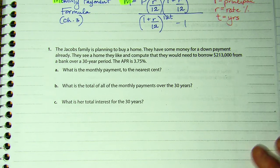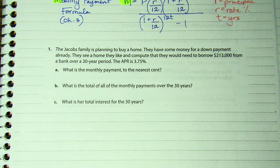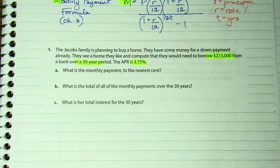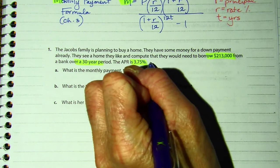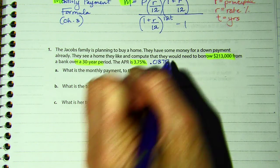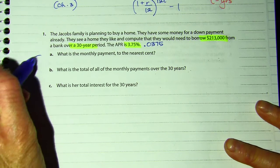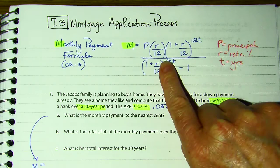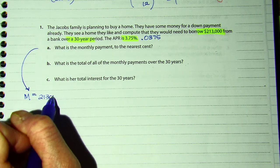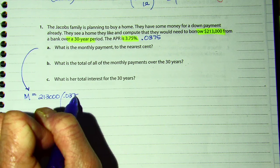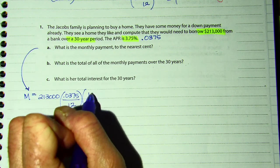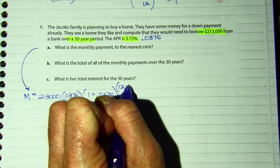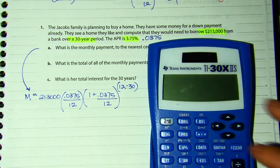So the Jacobs family is planning to buy a home. They have some money for a down payment already. They see a home they like and compute that they would need to borrow $213,000 over 30 years. And the APR, annual percentage rate, is 3.75 — let's go ahead and make that a decimal: .0375. What is the monthly payment to the nearest cent? So I'm going to calculate it right here using a calculator. So M equals P — the amount we're borrowing. Using this formula: 213 times our rate over 12, times 1 plus our rate over 12 to the 12 times 30.